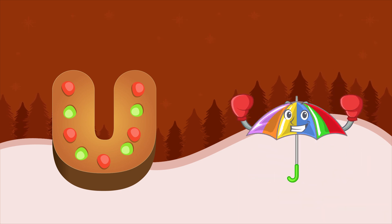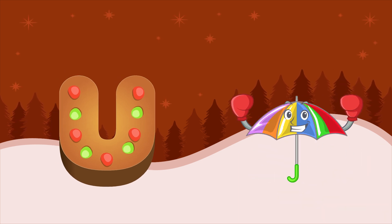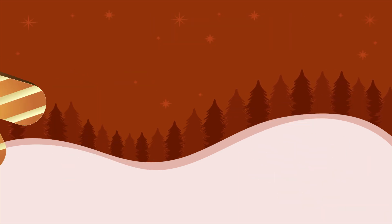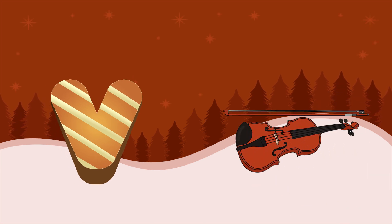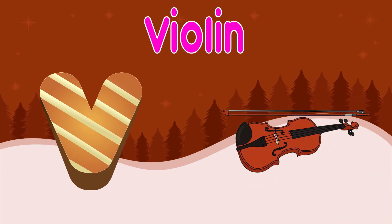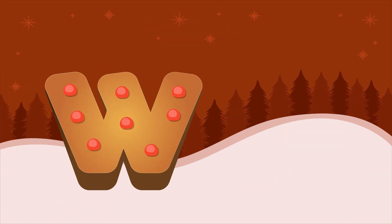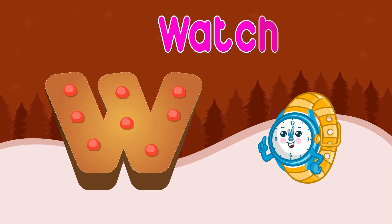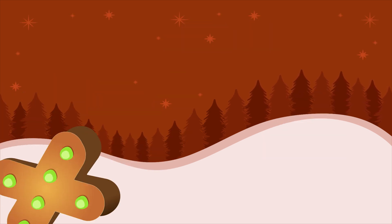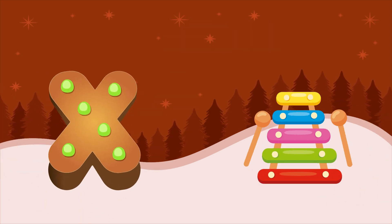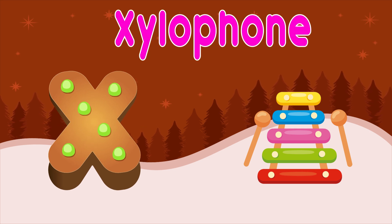U is for umbrella, u-u-umbrella. V is for violin, v-v-violin. W is for watch, w-w-watch. X is for xylophone, x-x-xylophone.